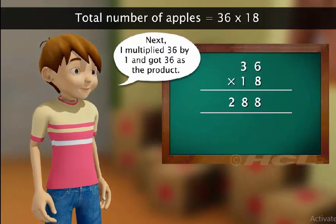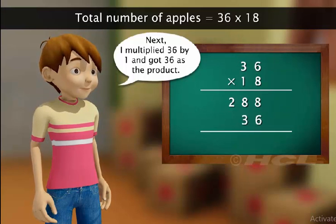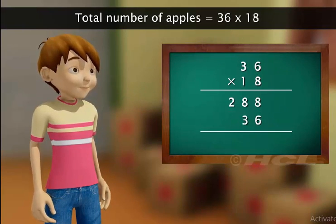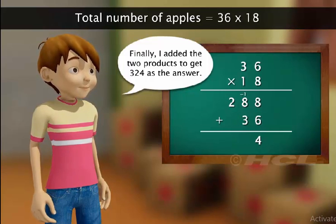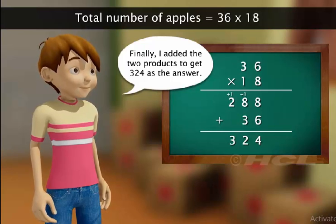Next, Sam multiplied 36 by 1 at the 10th place and got 36 as the product. Finally, Sam added the two products and got 324 as the answer.